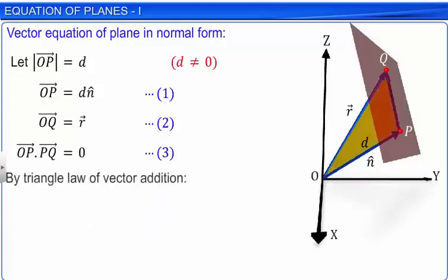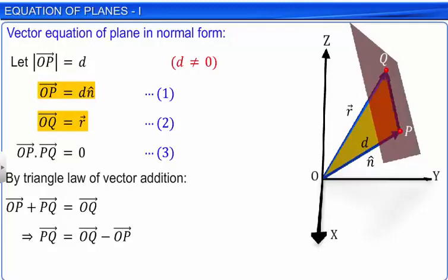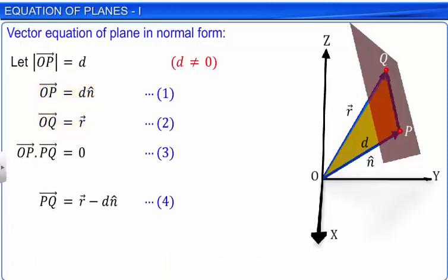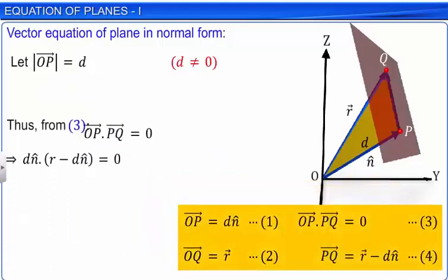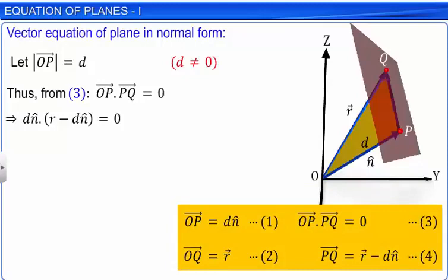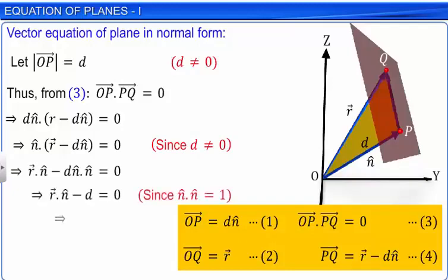Applying the triangle law of vector addition to triangle OPQ, we get vector PQ is equal to vector OQ minus vector OP. Substituting the values of the position vector of point Q and of vector OP from equations 1 and 2, we get vector PQ. Substituting this value of vector PQ and the value of vector OP from equation 1 in equation 3, and knowing that d is not zero, the expression reduces to the dot product of vector r and unit vector n̂ equal to distance d of the plane from the origin. This equation represents the normal form of the vector equation of the plane.